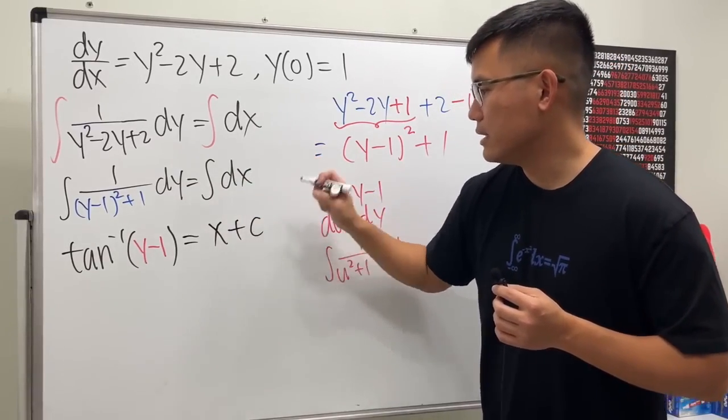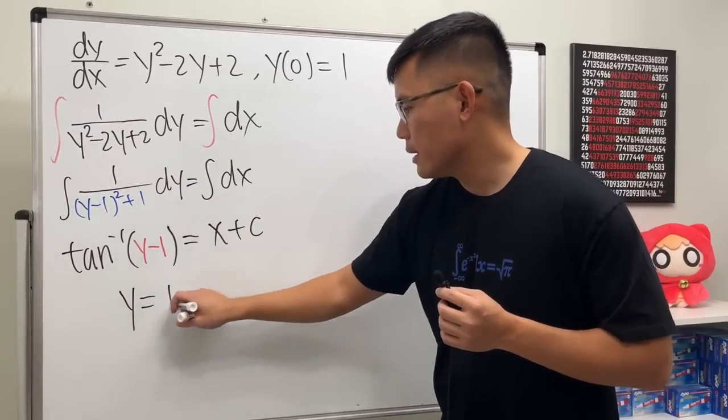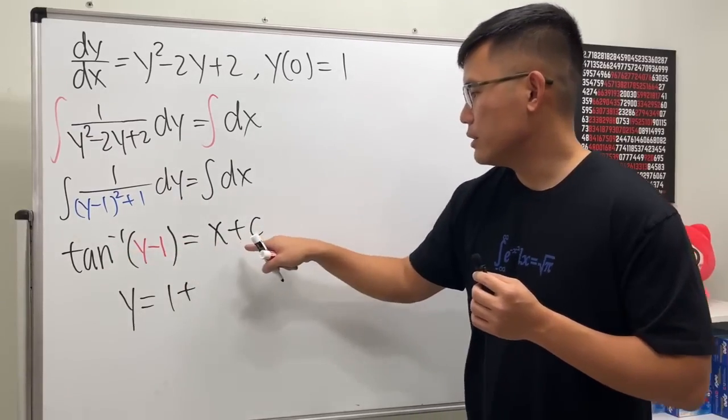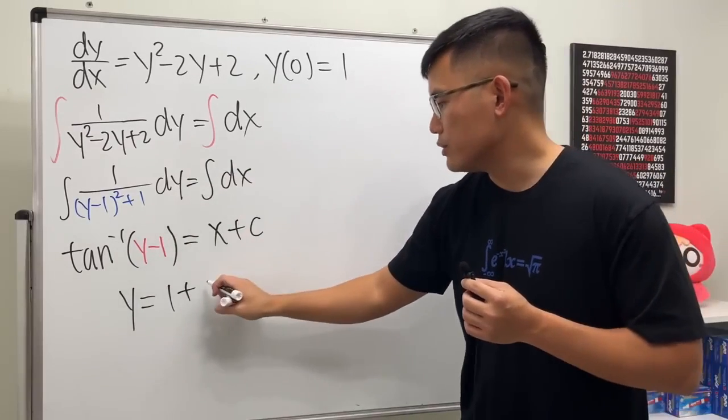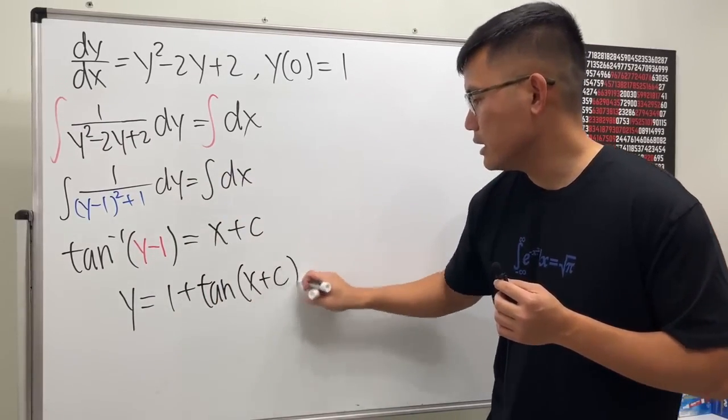And now put a +C, so we get y = 1 + tan⁻¹(x + C). Well, here becomes the original tangent of this, which is x + C. And that's the general solution.